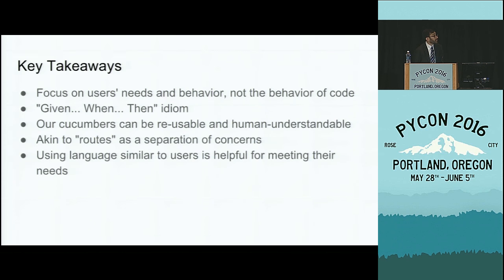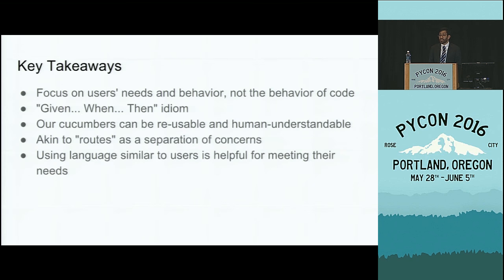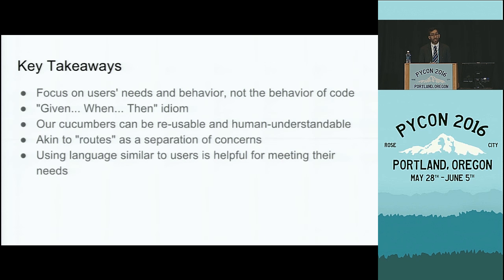In terms of key takeaways: the biggest takeaway is that we should focus on what users are trying to do, not what we want our code to do. I wanted to introduce this given/when/then idiom for describing the behavior of our software. We can construct these things in a way that are reusable — for example, the login or account creation functionality can be used across all of our tests. It is helpful to think about implementing these things the same way we think about routing. And I find it tremendously helpful to write my acceptance criteria and specifications in a way which is more accessible to non-technical people — that leads to better outcomes.